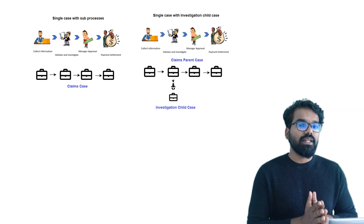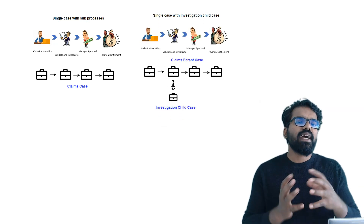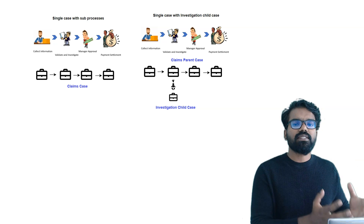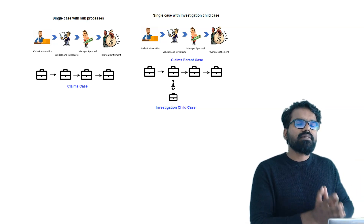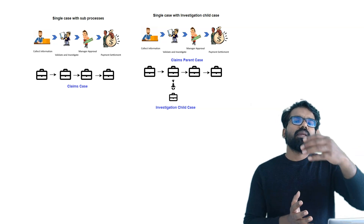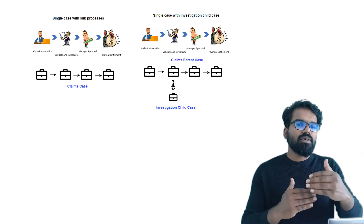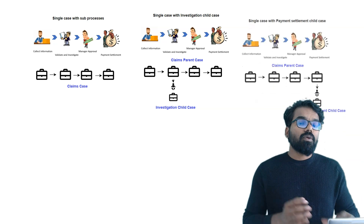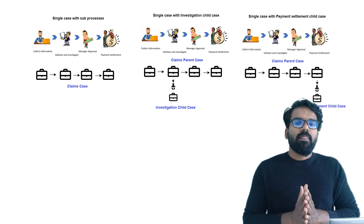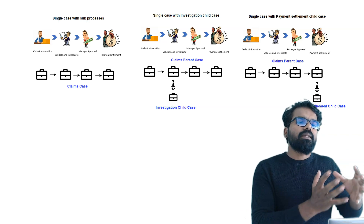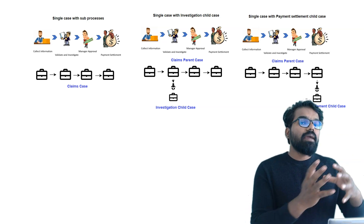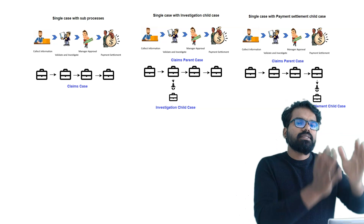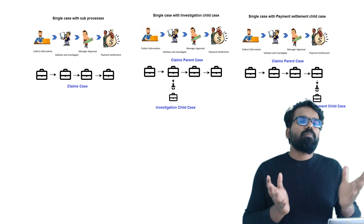Another solution is to create investigation as a child case, so you can spin up the investigation child case and route it to the investigation department. Once this investigation is completed, you can continue with the parent claim case. A third solution approach is that claims can be a parent case again, but with payment settlement as a child case. There can also be hybrid solutions where you have a single claims parent case, with both investigation and payment settlement as child cases. These are all different solution approaches you can take.